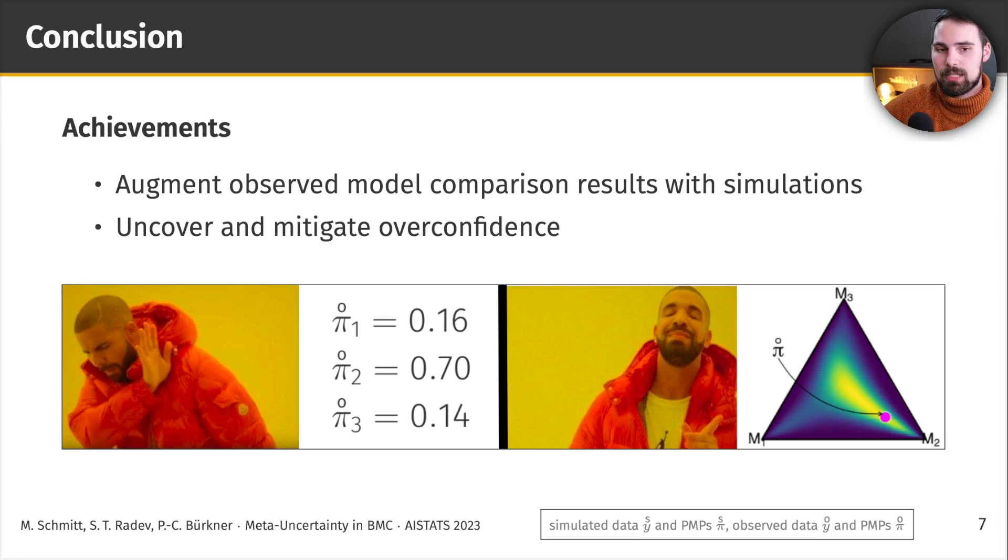So, to give you a brief conclusion, we use simulations to augment observed posterior model probabilities or model comparison results in general. We uncover overconfidence by visualizing it in a principled way, and we also mitigate it by this level 3 predictive mixture distribution.